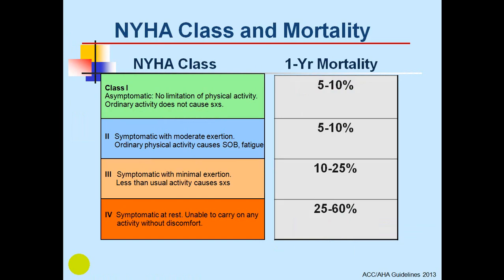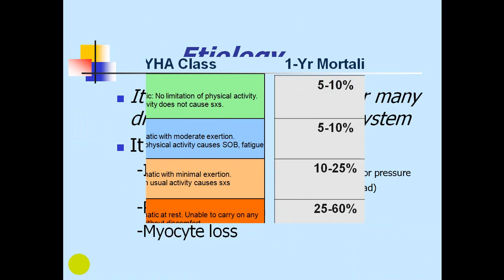Regarding one-year mortality according to NYHA classification: Class 1 has approximately 5 to 10 percent one-year mortality; Class 2 also 5 to 10 percent. Classes 3 and 4 carry poor prognosis — Class 3 reaches 25 percent, and Class 4 reaches more than 50 percent one-year mortality.